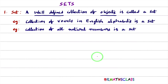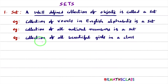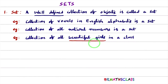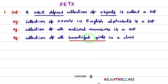Consider this: collection of all beautiful girls in a class. The point is — is 'beautiful girl' well-defined or not? If we consider a particular girl, that girl may be beautiful to you, but the same girl may not be beautiful to your friend. So 'beautiful girl' is not well-defined. Therefore, collection of beautiful girls in a class is not a set.